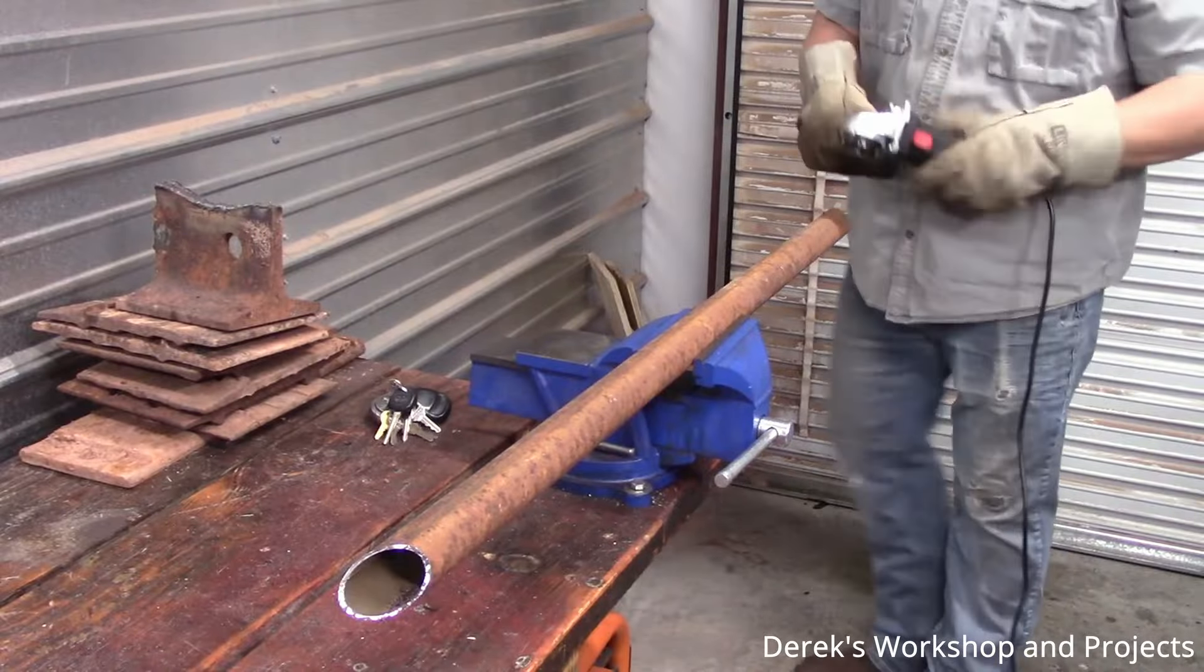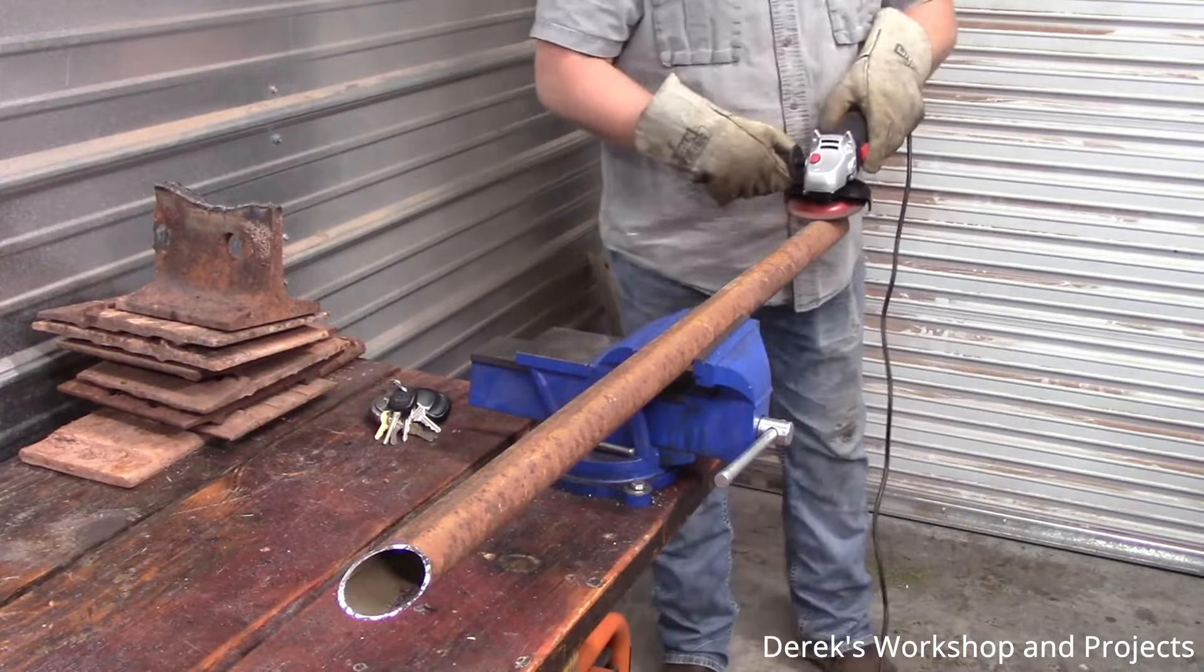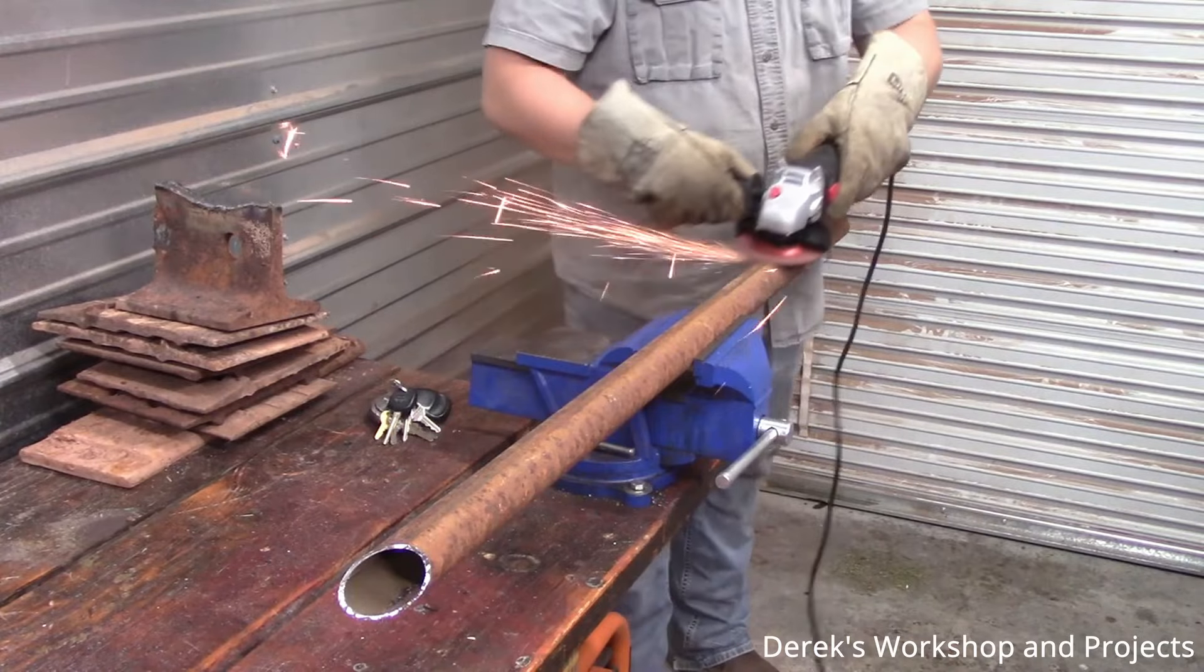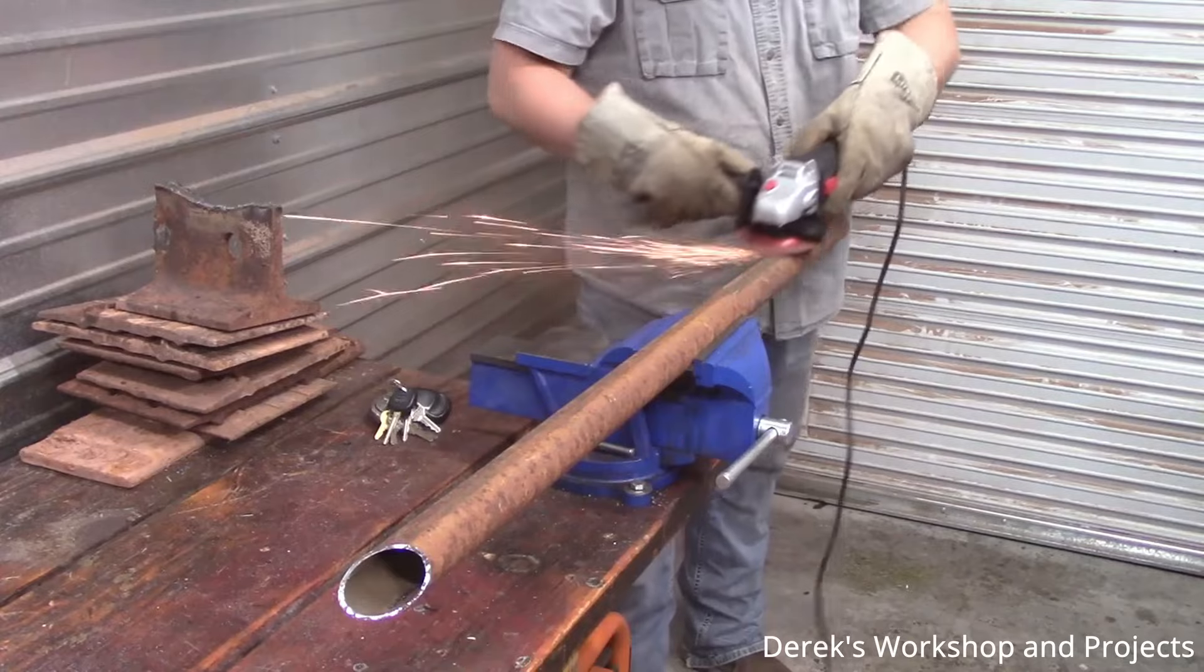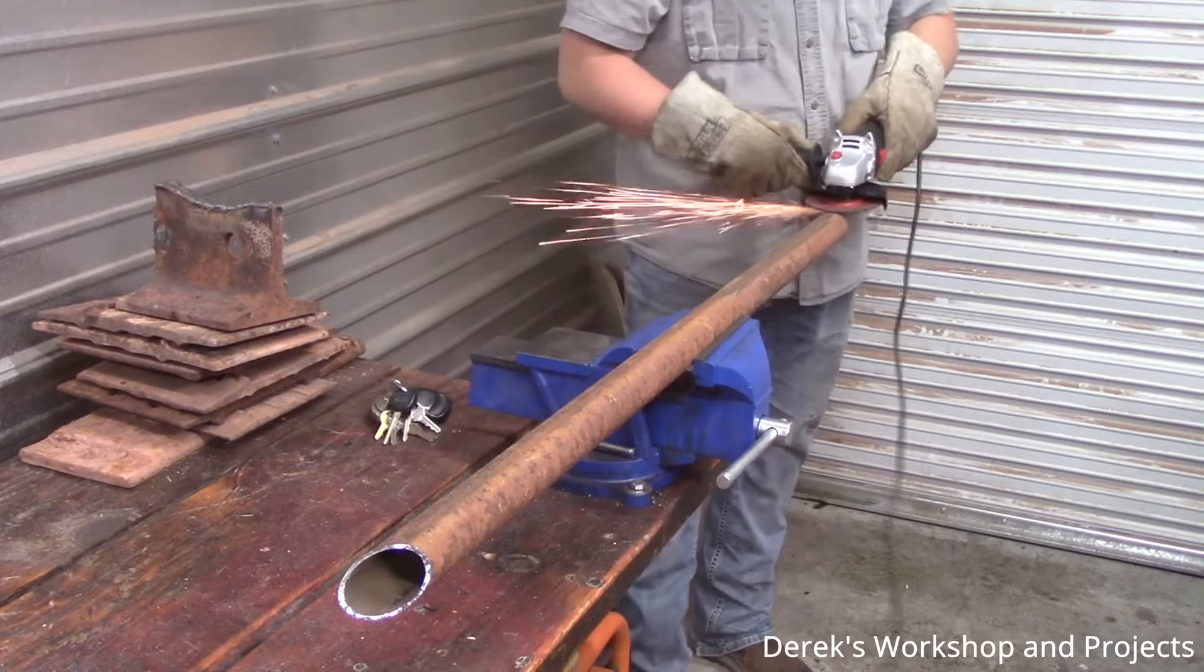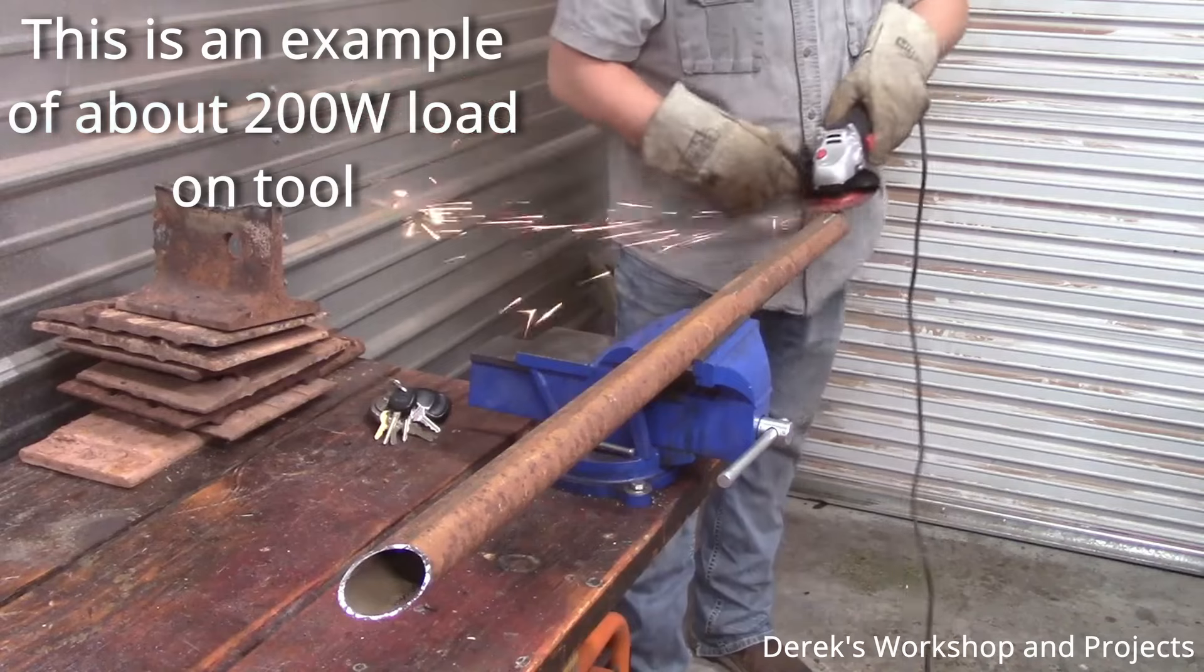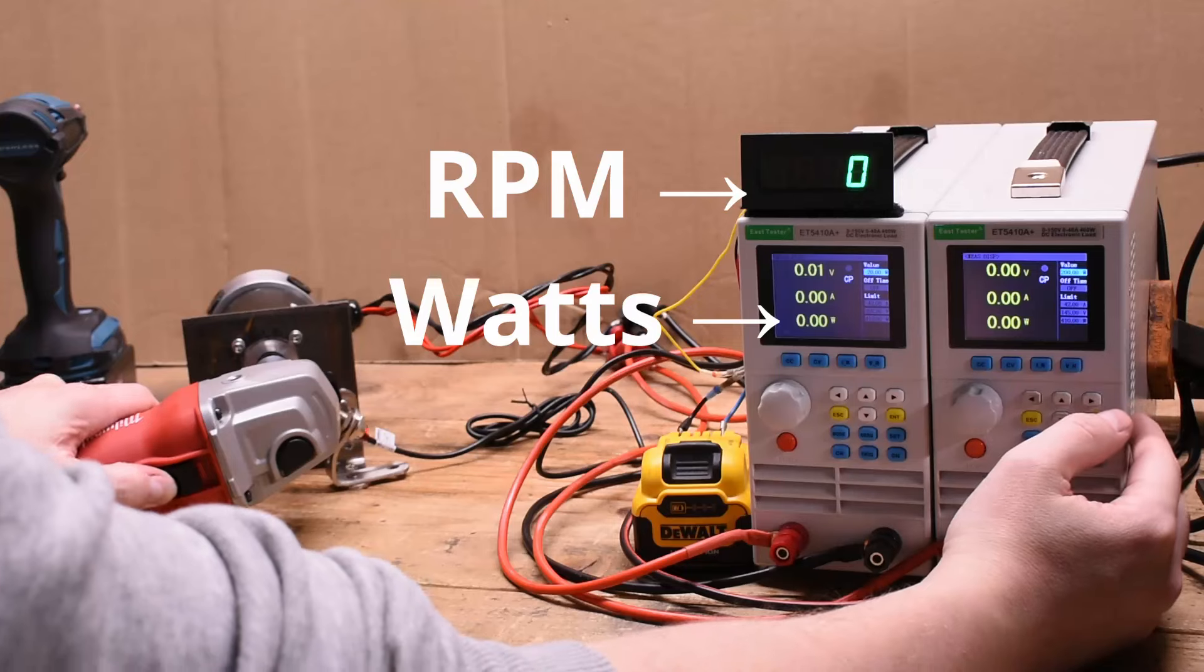Our first stop is RPM under load. Some angle grinders have different free speeds, so this will tell us how much work—spinny spinny grinding action—each tool is doing under some load. In this case, 200 watts of load, something every angle grinder should be able to do and is what we calculated some light to semi-moderate grinding requires based on measuring disc RPM drop while using one of these tools.